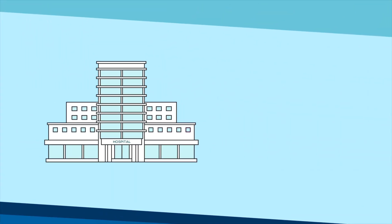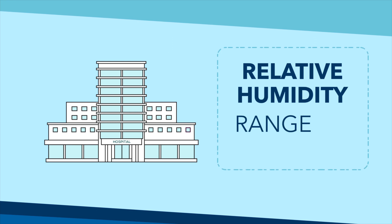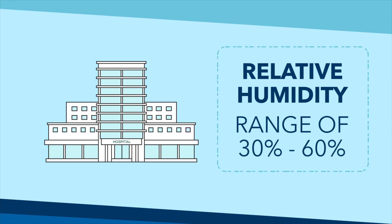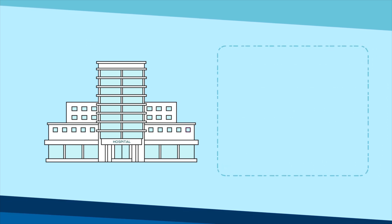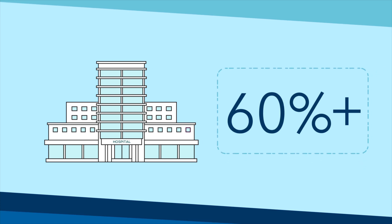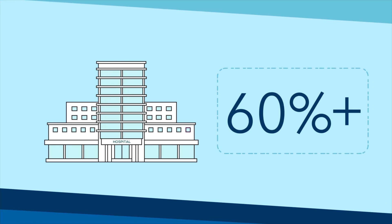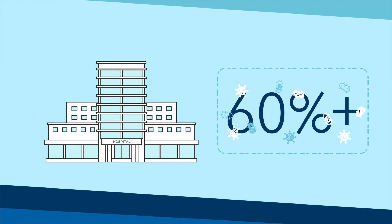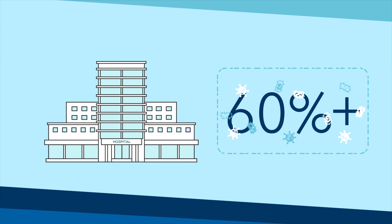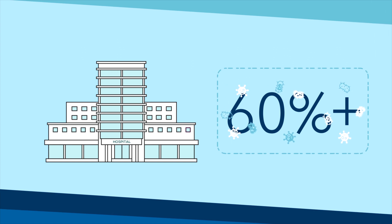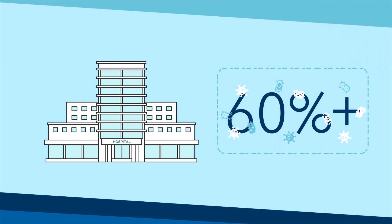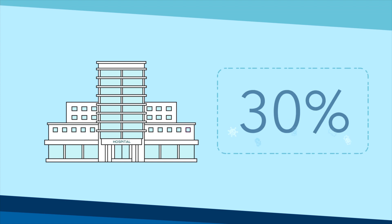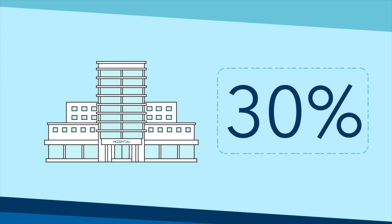Most areas of the hospital have minimum and maximum relative humidity ranges of 30% to 60%. When the relative humidity is above 60%, it not only causes patient discomfort, but it can begin to promote fungal growth. On the other hand, we need some humidity in the air because it helps reduce how far germs can travel in the air, which is why most areas have a minimum of 30% relative humidity.